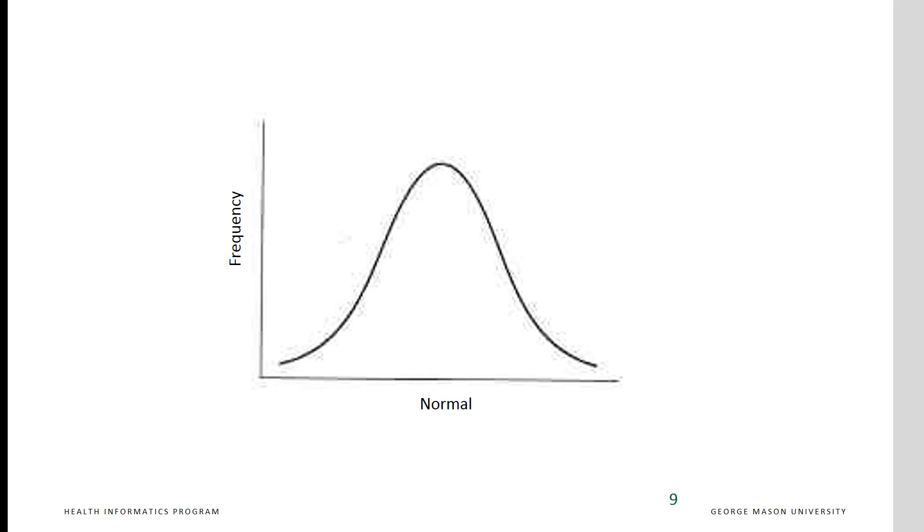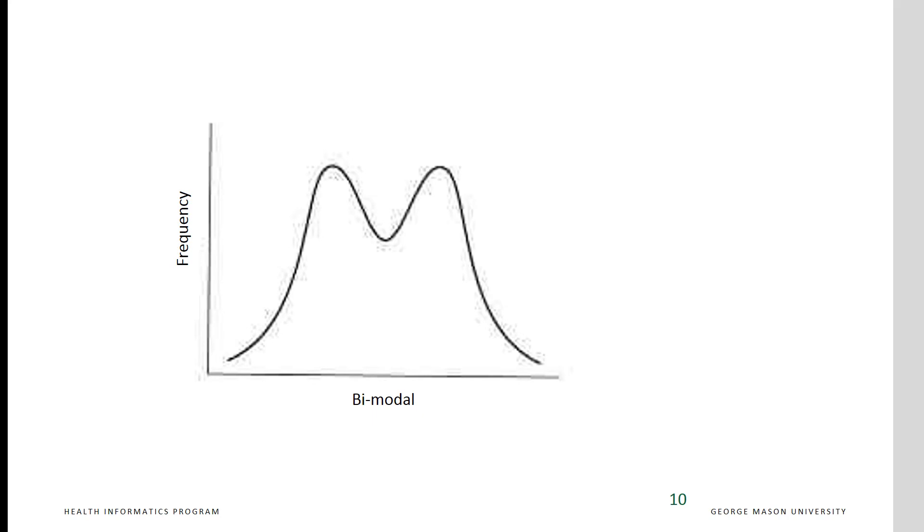When mean, median, and mode are the same, then the shape of the distribution is symmetric. Here we are showing a normal distribution. In this distribution, we have the situation where mean and median are the same, but there are two modes different from mean and median.